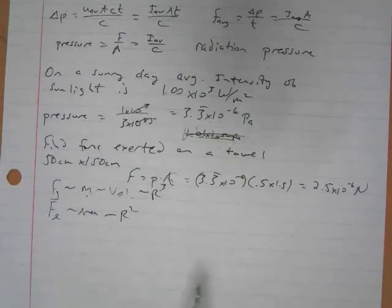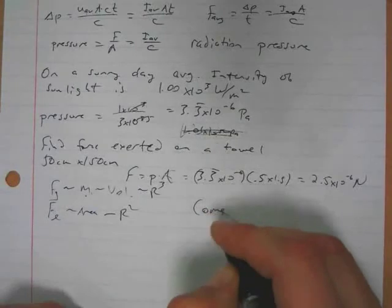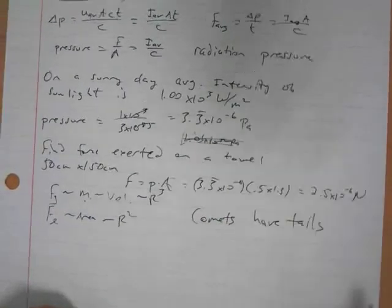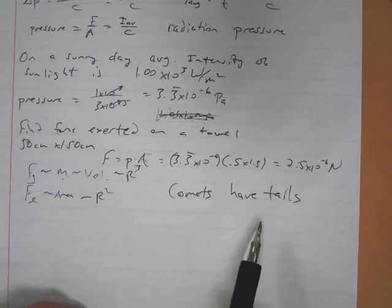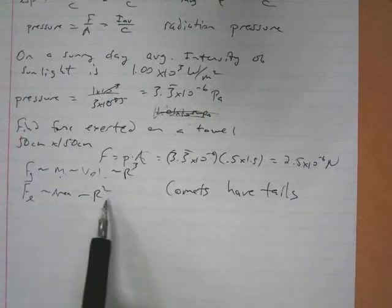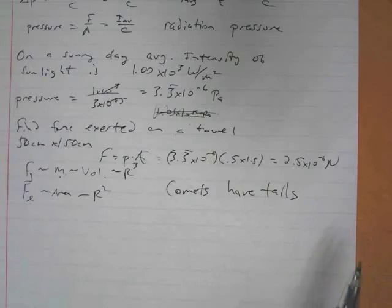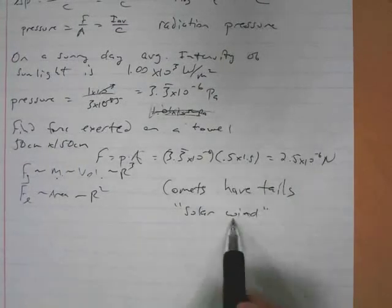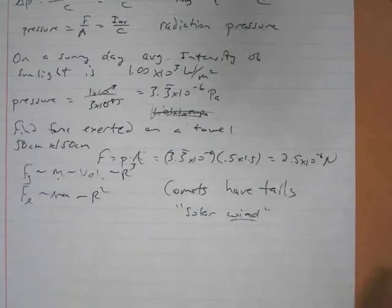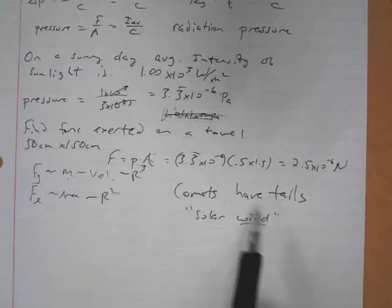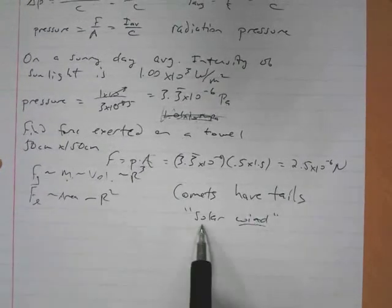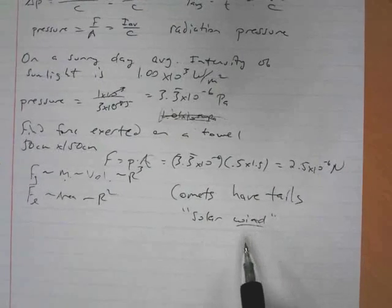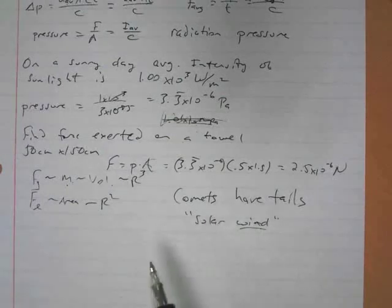And this is actually why comets have tails. Because the radiation pressure from the sun causes these little particles in the comet to be blown backward away from the sun more strongly than the gravitational force causes those same particles to be pulled toward the sun. So that's an interesting little effect, and it's called solar wind.